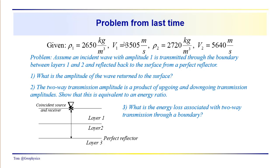I left you with this problem last time. We have a fairly simple model with some questions designed around it. You have densities and velocities for two layers, and the problem assumes an incident wave with amplitude one is transmitted through the boundary between layers one and two, then reflected off a perfect reflector back to the surface. We are assuming a plane wave and ignoring absorption or attenuation losses.